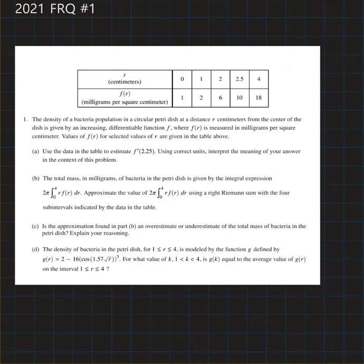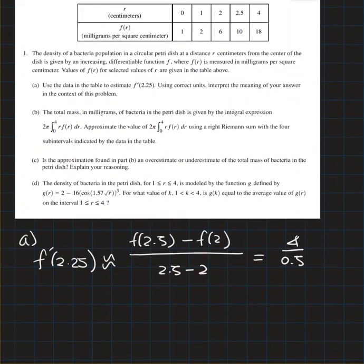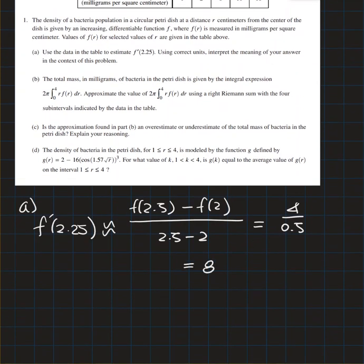Number a: use the data in the table to estimate f prime of 2.25. You need to use the approximation and choose the point between 2.5 and 2. F of 2.5 minus f of 2 over 2.5 minus 2. This will be 4 over 0.5 which equals 8, and the unit of this will be milligrams per square centimeters per centimeters.